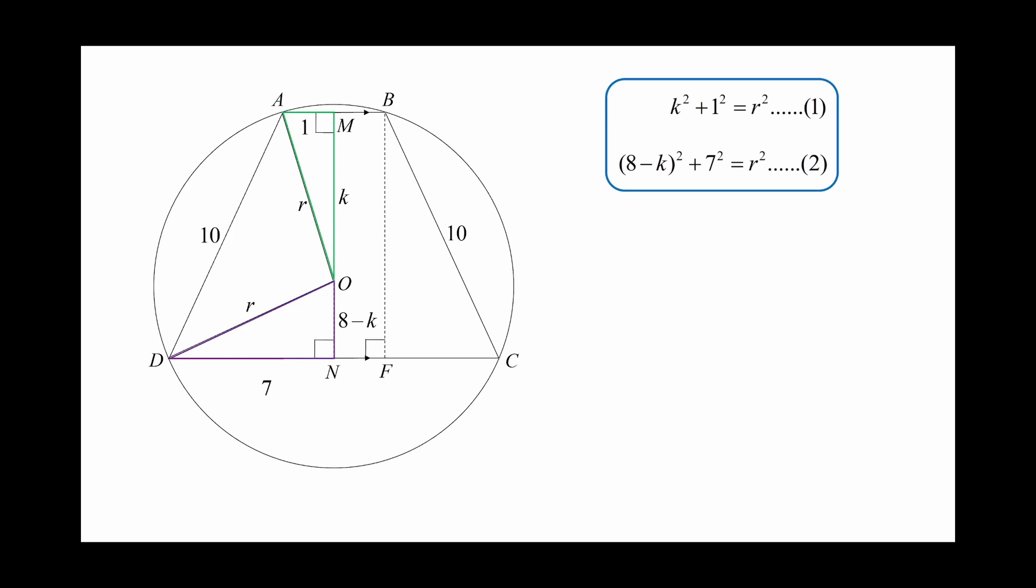We can eliminate R by putting equation 1 into equation 2 like this. Expand the perfect square term on the right-hand side, which is equal to 64 minus 16K plus K square. Cancel out the K square terms on both sides and simplify it, we get a simple linear equation. Solving it, we have K is equal to 7.